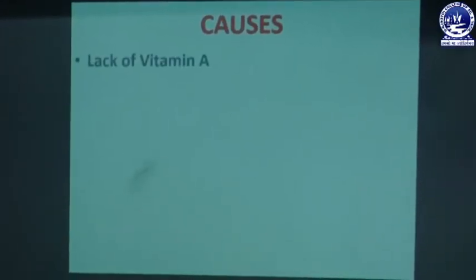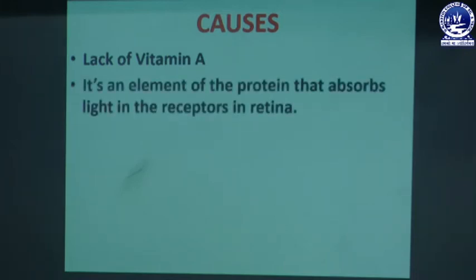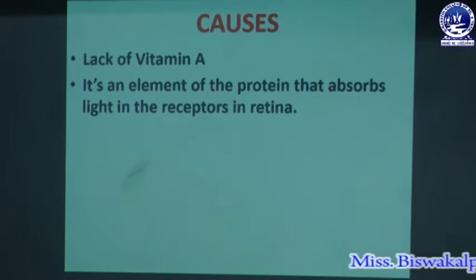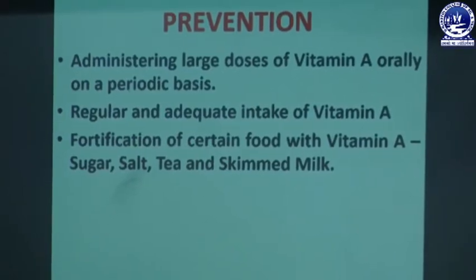The causes of xerophthalmia: it occurs due to lack of vitamin A. Vitamin A is an element of the protein that absorbs light in the receptors in the retina. When the retina is not getting vitamin A, it will fail to detect light, causing xerophthalmia. We can get vitamin A from dietary foods such as eggs, meats, poultry, and fish. If we are not taking these foods, we should take supplements to get sufficient vitamin A and eradicate xerophthalmia.